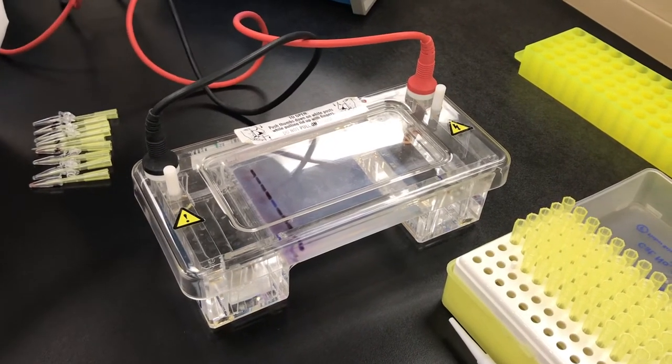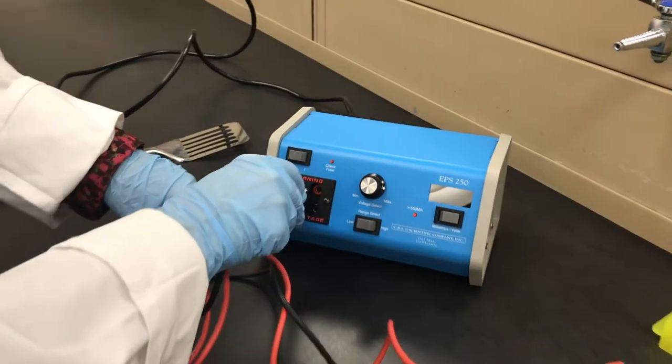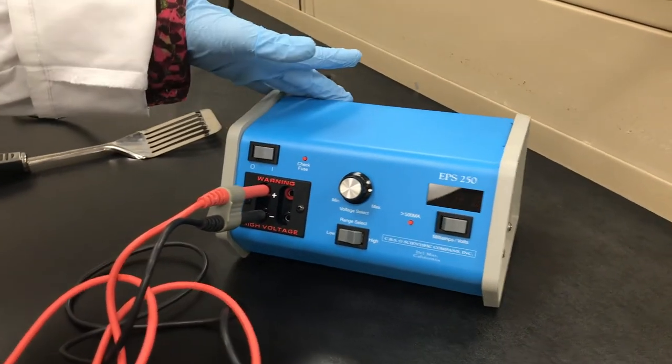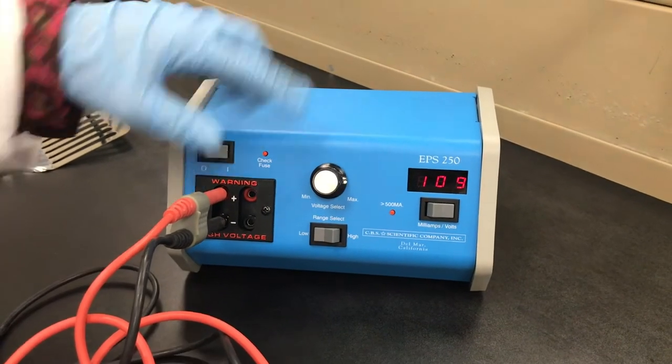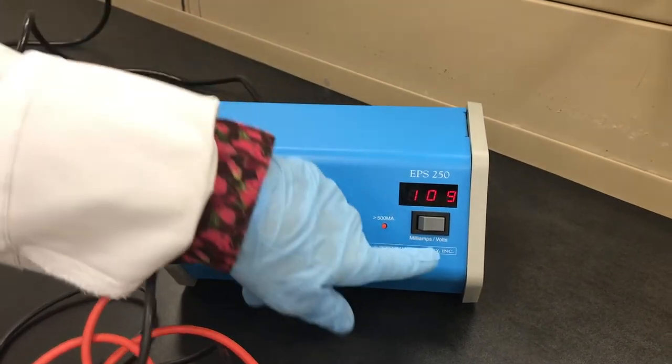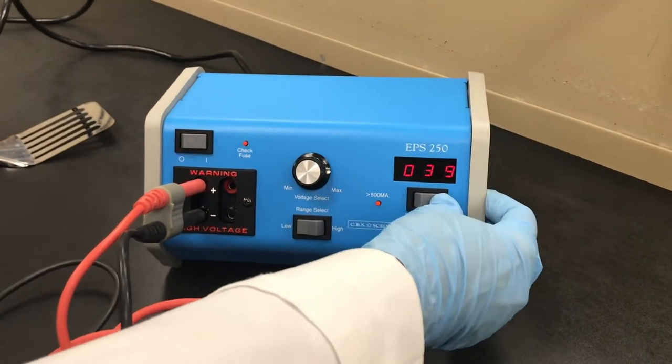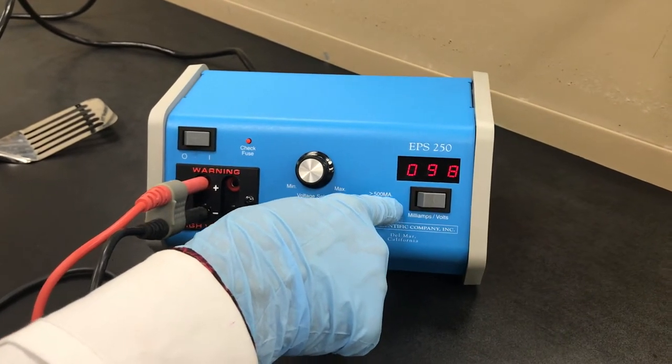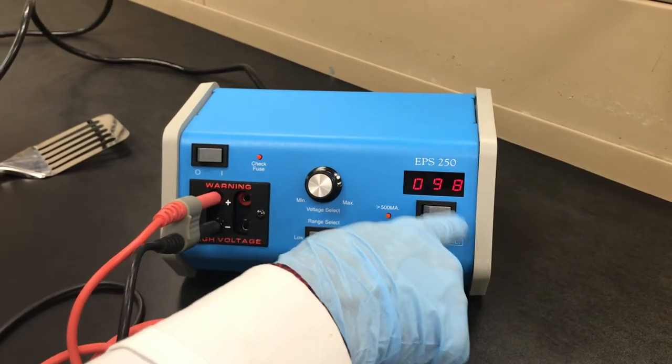All right, so now I'm plugging it into the power supply. Everything is color-coded here, so if I follow the colors properly, it should be good. We're on. Checking that we are. We want to run. I like to be in the 90s, so we're going to run it in the 90s, and it should be on volts. So we're at 98 volts.